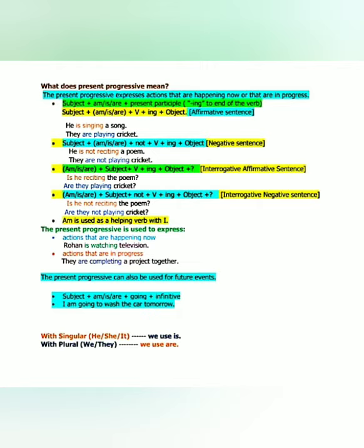So 'Is he reciting the poem?' and 'Are they playing cricket?' For interrogative negative sentences the formula is: Am/is/are + subject + not + verb + ING + object + question mark. Remember, whenever you find 'not' they are negative sentences. Here we get a question mark at the end and also 'not', so that's why it is an interrogative negative sentence. So 'Is he not reciting the poem?' and 'Are they not playing cricket?'